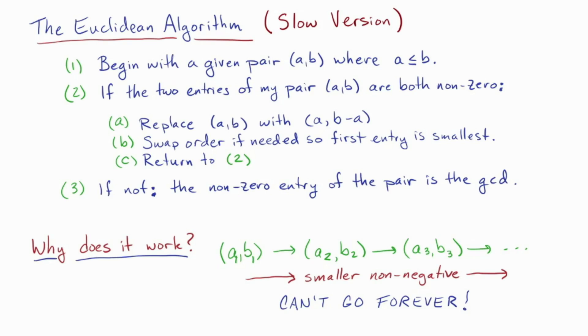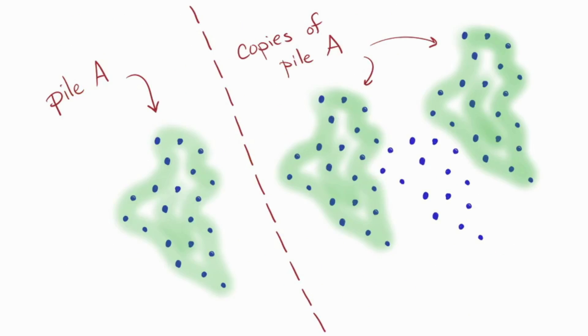So you'll notice that I did call this the slow Euclidean algorithm. So for example, you did notice that the example that we did, we actually took two copies of pile A out of pile B. And in the algorithm as I just presented it, these are two separate steps. So I encourage you to pause here and think about how we might do this more efficiently, and then continue the video after you've given it a little bit of thought.